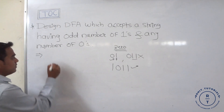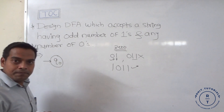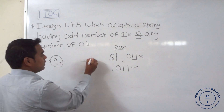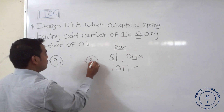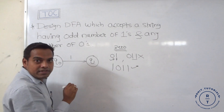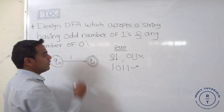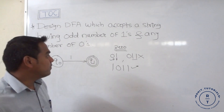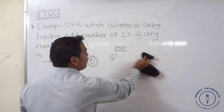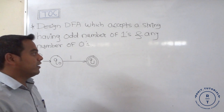We always start with the initial state q0. If '1' is the input at q0, it goes to state q1. Since '1' alone is the minimum accepted string, q1 is the final state. So if only '1' is available as input to the finite automata, that input is accepted.